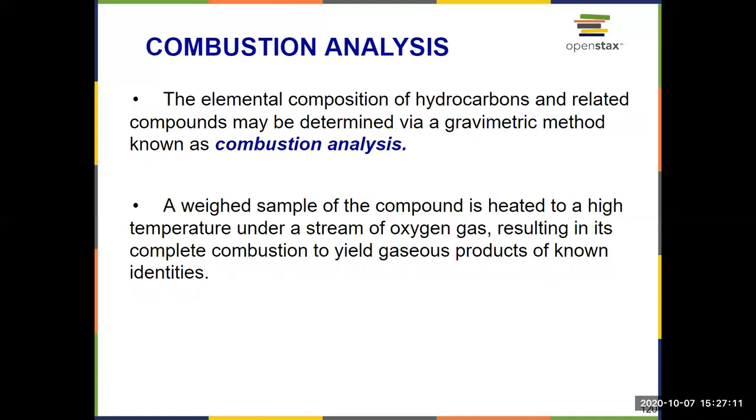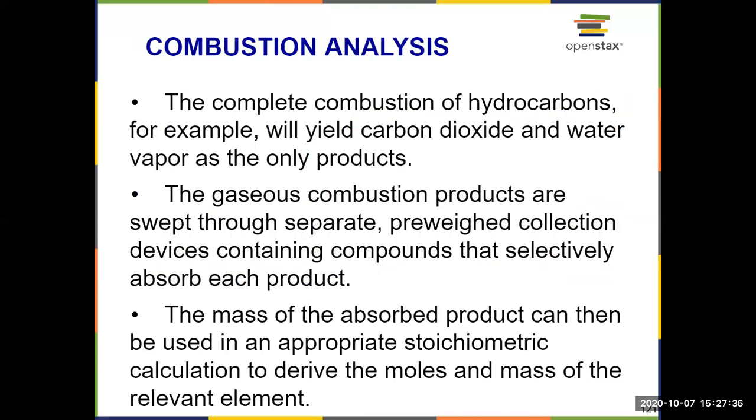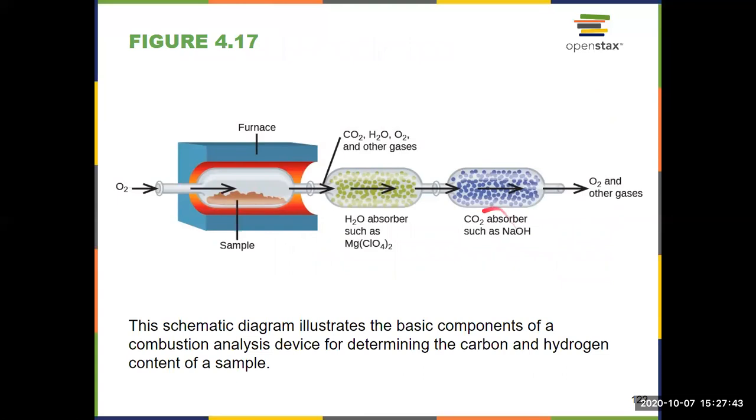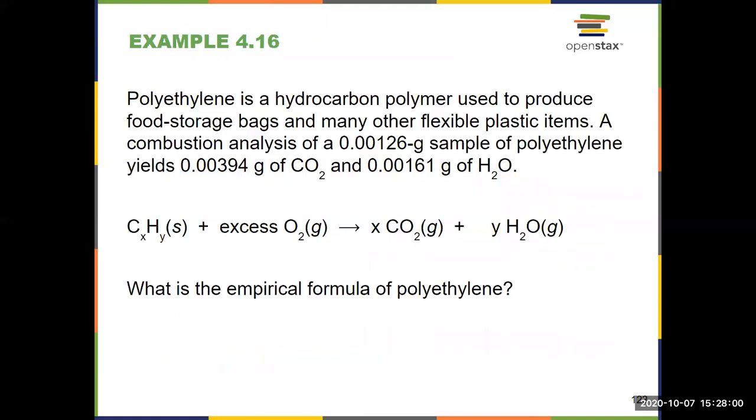That was method number two, gravimetric analysis. We finish with combustion analysis. Combustion analysis is useful because it allows us to determine the composition of hydrocarbons and similar compounds by combusting them, reacting them with oxygen to produce CO2 and H2O. Then we can determine those quantities as well. If it's a complete combustion, this is what that looks like. Then you absorb the CO2, you absorb the H2O, figure out the mass difference, how much mass is added. So we're given the grams of H2O or grams of CO2, and then we're in business. We can use those to figure out the original masses of the hydrocarbons.